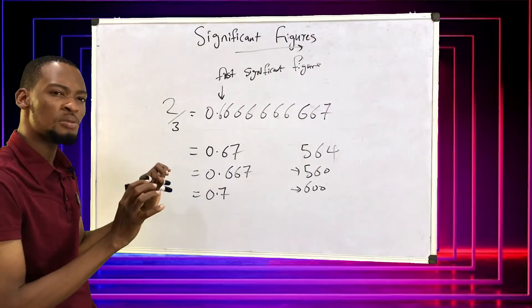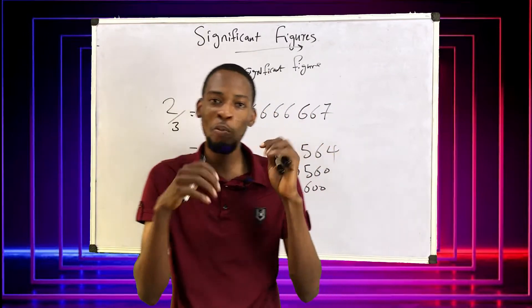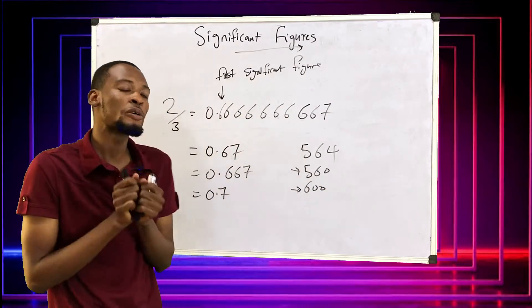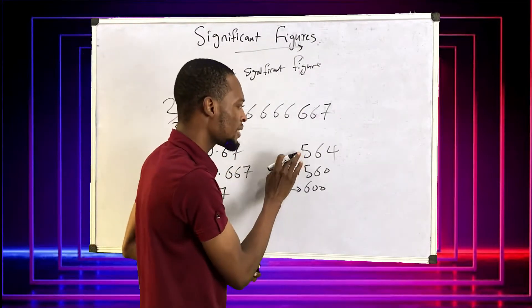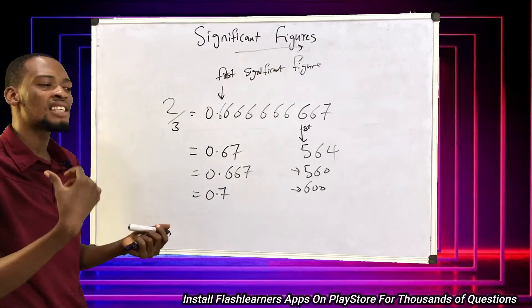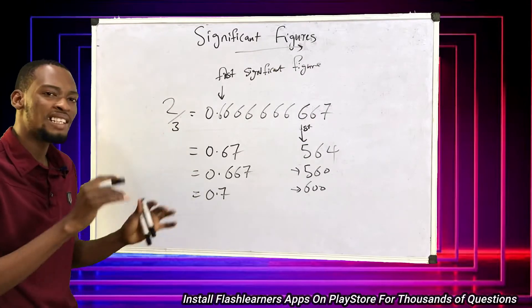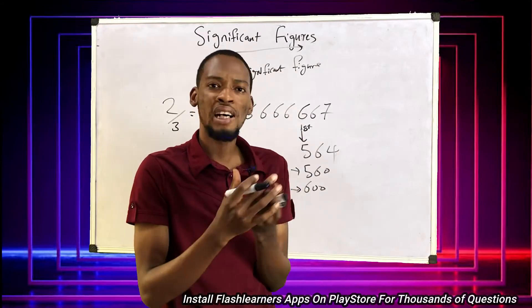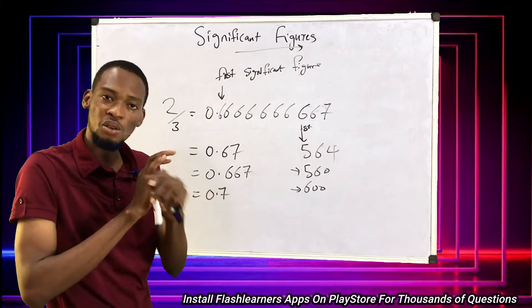Having understood the first significant figure, you might think the second significant figure is the second number that is not equal to zero, and the third significant figure is the third number that is not equal to zero. It is wrong. While the first significant figure is the first number that is not equal to zero, the second significant figure is the digit next to the first significant figure. Any digit next to the second significant figure is the third significant figure, whether zero or not.